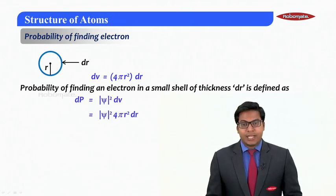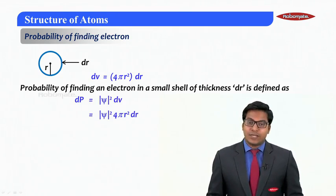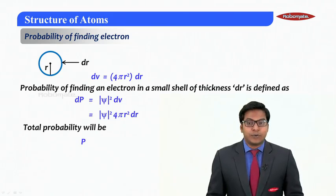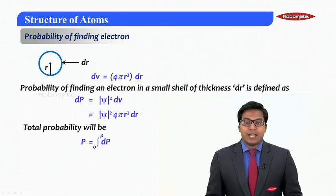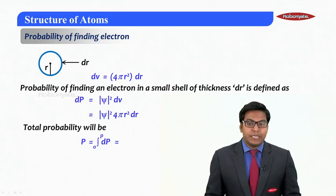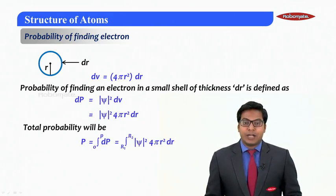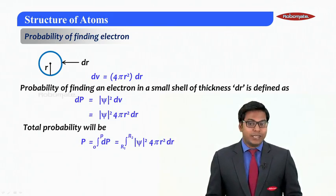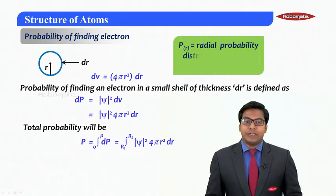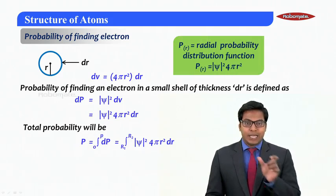Which can be written as 4πr² ψ² into dr. So the total probability we learned that I can integrate from 0 to infinity, and it comes to be integral r1 to r2 of ψ² 4πr² dr.